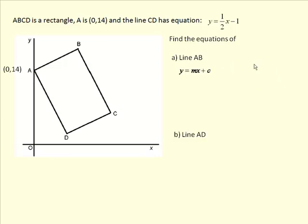So for line AB, well, we know that the line CD has a gradient of a half. This is a rectangle, and so AB is parallel to it. And parallel lines have the same gradient, so that has a gradient of a half as well.